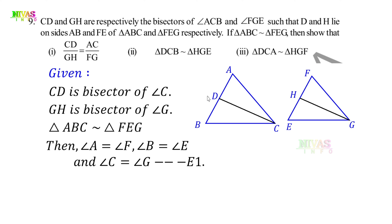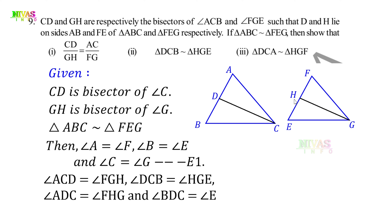Since CD and GH are bisectors, angle C and angle G are each divided into two equal parts. So we get: angle ACD is equal to angle FGH, and angle DCB is equal to angle HGE. Also, angle BDC is equal to angle EHG, and angle CDA is equal to angle GHF. This is equation 2.